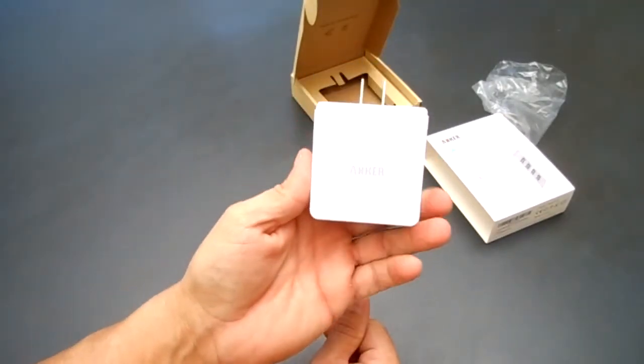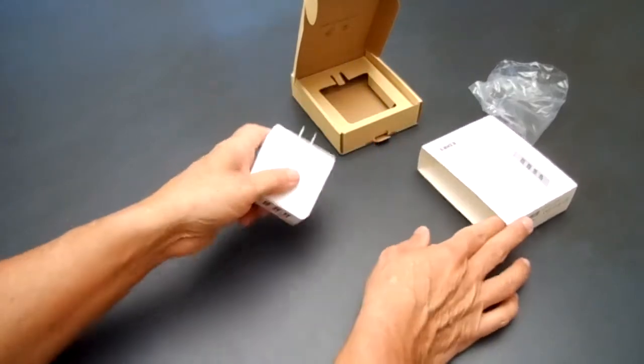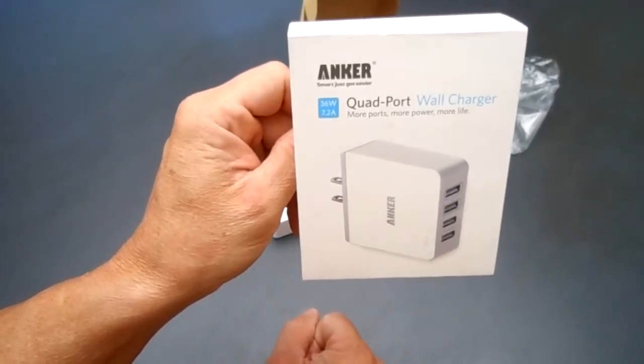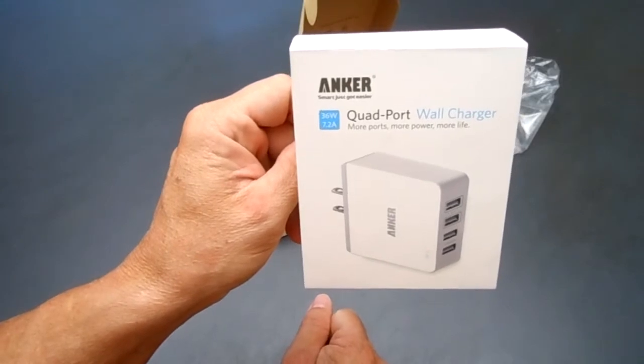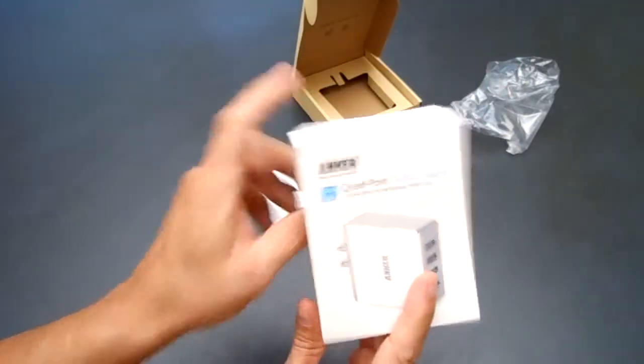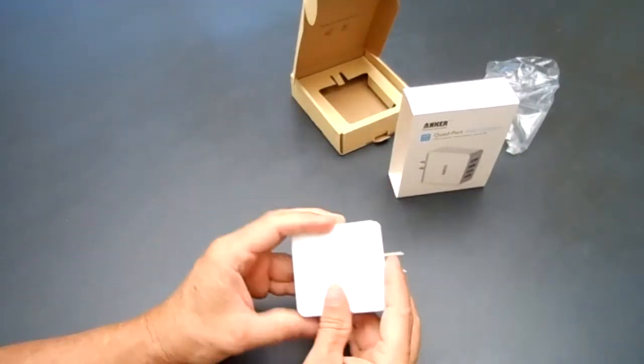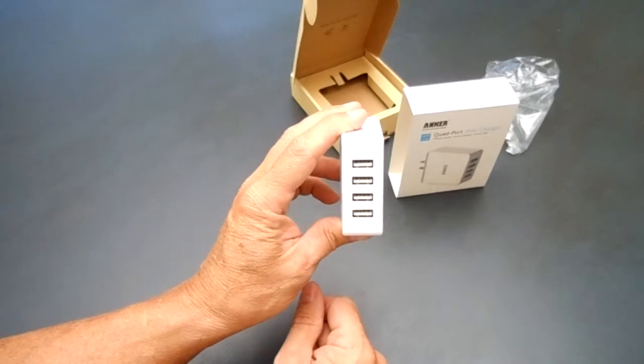So that's going to be it for right now. That is the Anker four-port wall charger, and you can buy it on Amazon for $19.95. I will leave a description down below. If you're looking to pick up something where you can charge multiple things at the same time, this is probably a good idea for you.